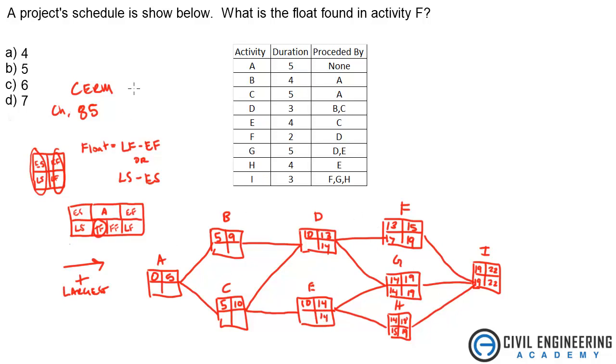You're gonna keep going to fill out the rest of that, but the problem only asked for what the float was in activity F. Now that we have all these, we can figure that out. So we know what float is, we wrote that down. All we need to do is take one of these two columns and subtract them. So if we take nineteen minus fifteen, that gives me four days of float. You could also do seventeen minus thirteen, which is the same thing. So four days of float gives me answer A.